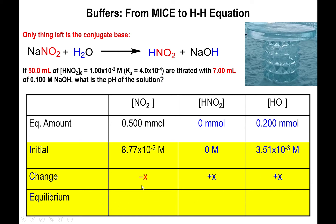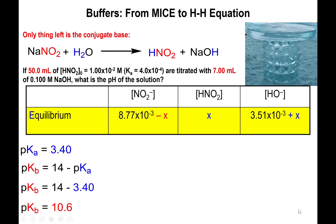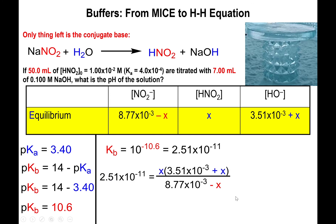Applying changes of minus x and plus x for reactants and products respectively, we set up the Kb expression for HNO₂ (Kb = 2.51 × 10⁻¹¹). The ratio of concentration to Kb is again on the order of 100 million, far greater than 400, so the plus x and minus x terms in the Kb expression can be discarded — only the x being multiplied remains.